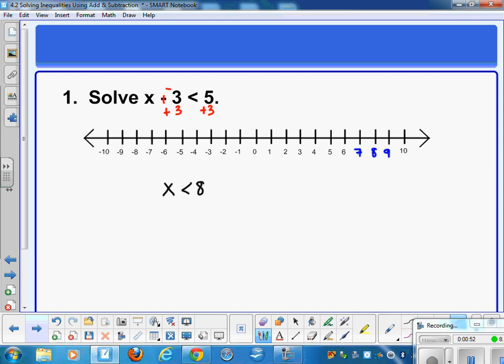So in terms of graphing this, we're going to start with 8. Since 8 is not less than 8, it's not to be included in our graph of the solution set. So it's only numbers that are less than 8. We're going to start with an open circle and shade in the direction where you see the numbers less than 8, and that would be to the left.